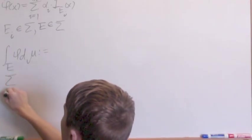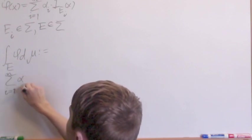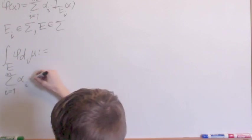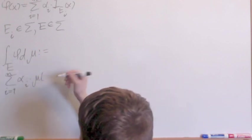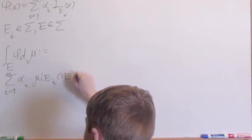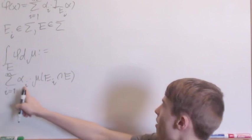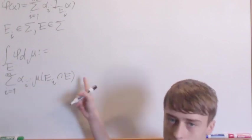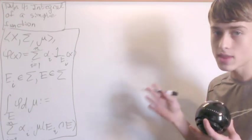we say that the integral over e of phi d mu is just as the intuition told us. The sum from i equals 1 until n of alpha i times, and then we're going to have the measure. Except now we have this extra set e. So let's just take the intersection. So the sum from i equals 1 to n of alpha i times mu of ei intersect e. And that's how you do it.